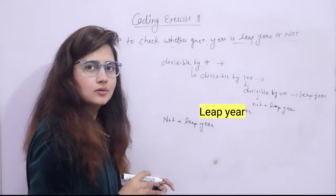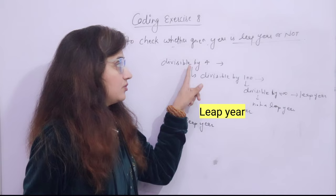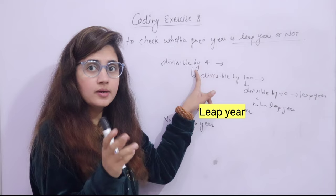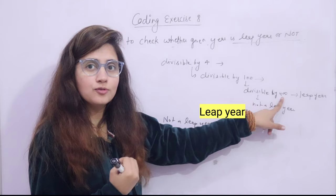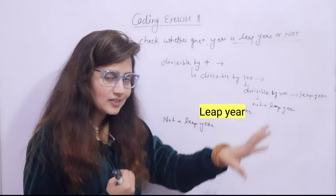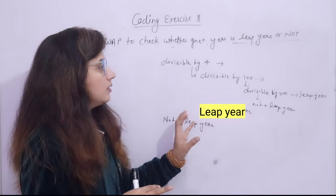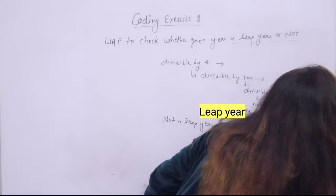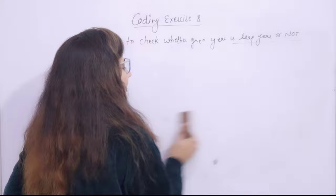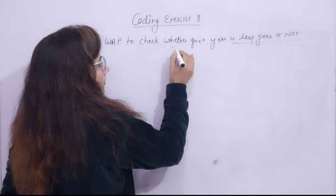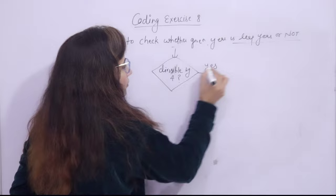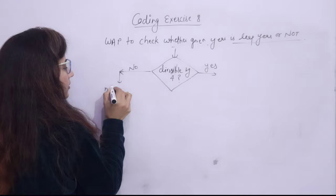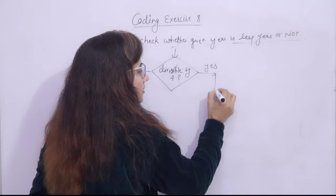So the simple logic is: a number divisible by 4 is a leap year, except when it is divisible by 100, unless it is also divisible by 400. Let me draw the flowchart so the logic becomes clearer. We check first: divisible by 4? Two cases — yes or no. If no, then not a leap year directly. If yes, then we check the next condition.